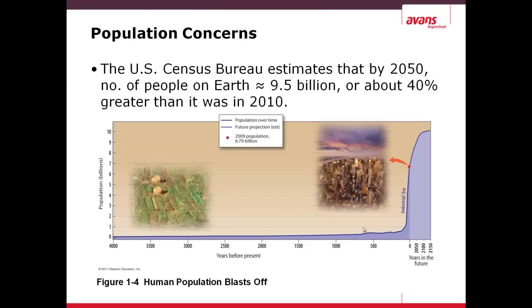The U.S. Census Bureau estimated that by 2050, the number of people on earth will be approximately 9.5 billion, and that's 40% greater than it was just a few years ago in 2010.